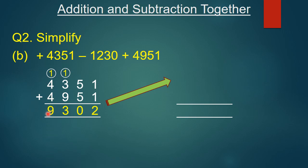Our sum is not completed yet — abhi humara sum pura nahi hua hai. When addition and subtraction are together, we add first then subtract. We have done the addition. Now we will subtract. The minus sign is in front of 1230, so we subtract 1230 from 9302. Since 9302 is bigger than 1230, we write 9302 on top and 1230 below it.